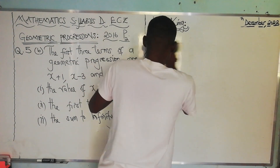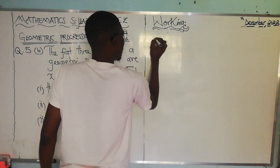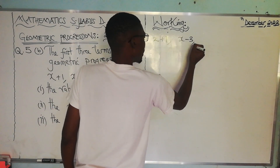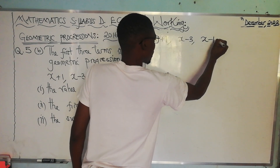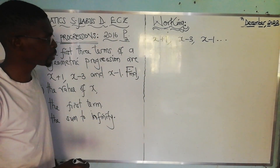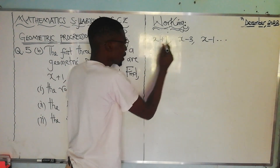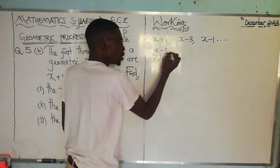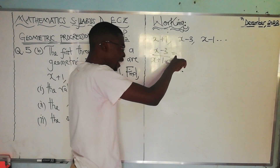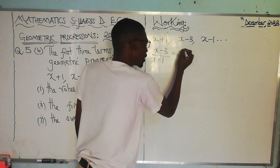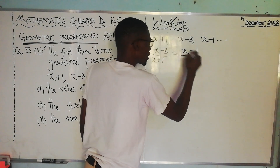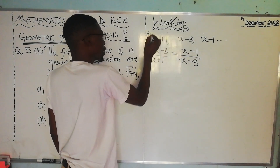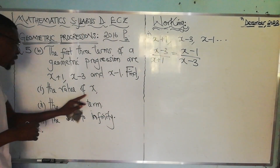Our first term a is x plus 1, the second term is x minus 3, and the third term is x minus 1. If this is a geometric progression, then x minus 3 divided by x plus 1 must equal x minus 1 divided by x minus 3. We are now answering the first part of the question: find the value of x.